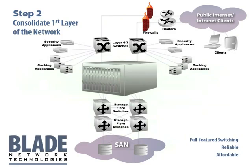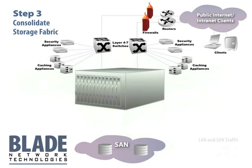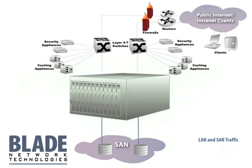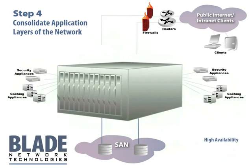Blade provides a complete family of Ethernet, IP, and application switches that serve as the network backbone for the industry's most widely installed blade server systems. Many enterprises are considering internet protocols as a means to provide connectivity to their storage area network. Blade switches are designed to manage both LAN and SAN traffic. With support for network layers four through seven, Blade makes it possible to inexpensively add high availability and load balancing features.